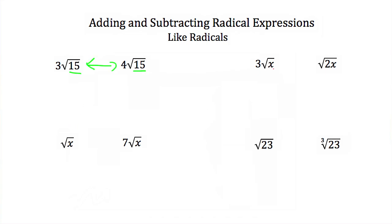Here we have 3 square roots of x and the square root of 2x. These are both square roots but here we have an x and here we have a 2x. So what's underneath the square root is different — these are not like radicals. Next we have the square root of x and 7 square roots of x. They're both square roots and they both have x's underneath, so these are like radicals.